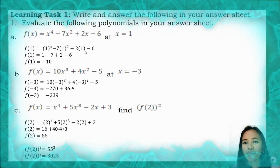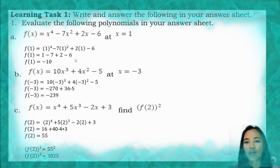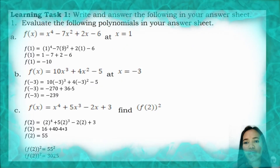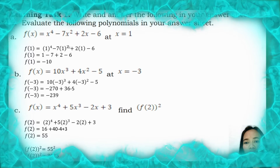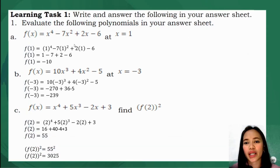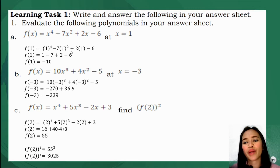Let's have number one. f(1) is equal to 1 to the fourth minus 7 times 1 squared plus 2 times 1 minus 6. If we're going to evaluate this, it will be 1 minus 7 plus 2 minus 6, which gives you negative 10.